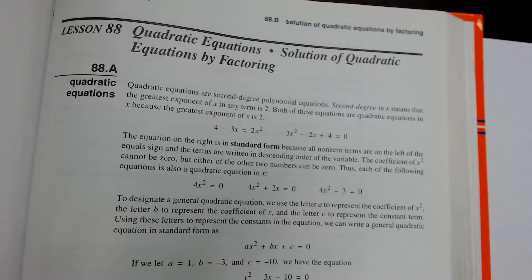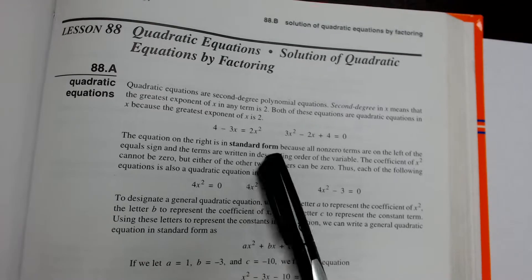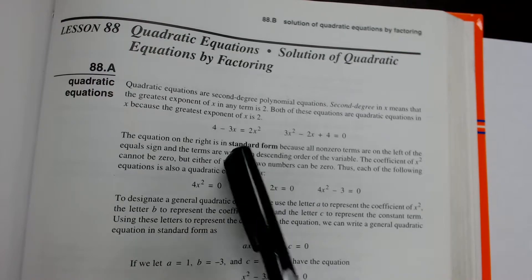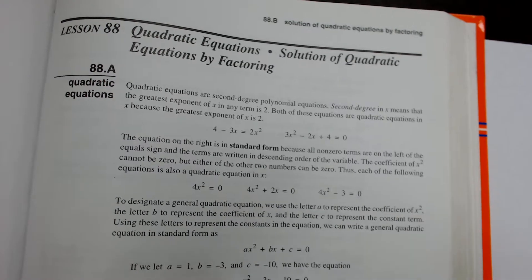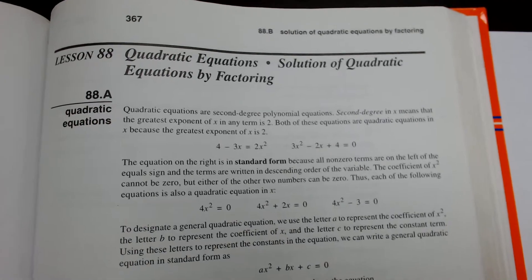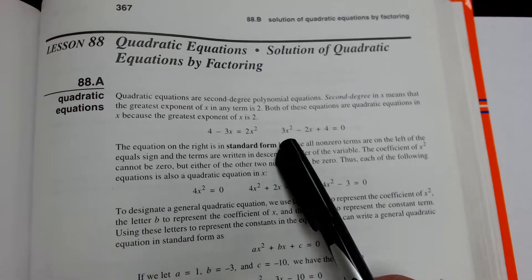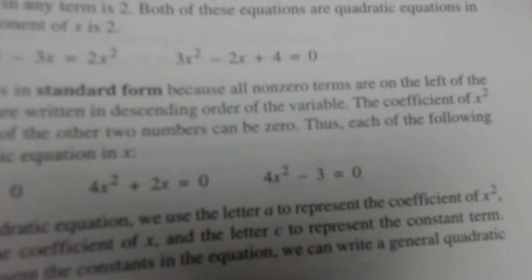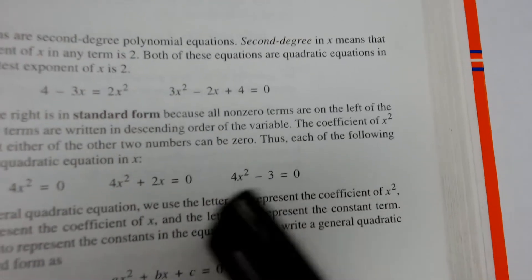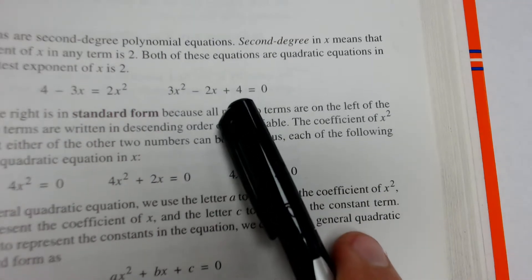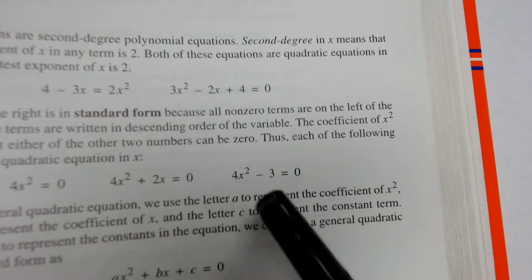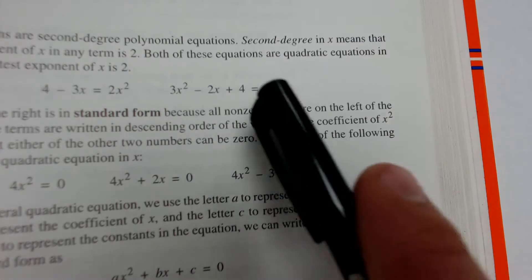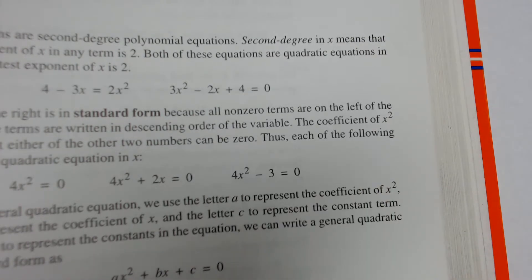Quick intro: a quadratic equation is pretty much any equation that has an x squared term. They typically follow the form we see here on the right, which has an x squared term, an x term, and a constant term. This should be pretty familiar because we've been doing a lot of work with these lately, and all that work is going to pay off when it comes to solving these equations.